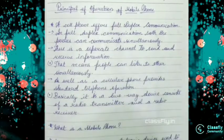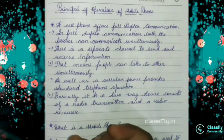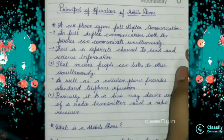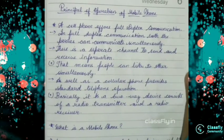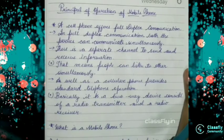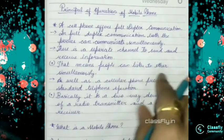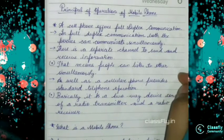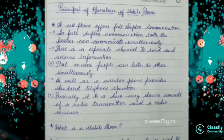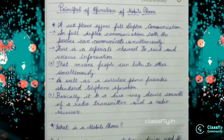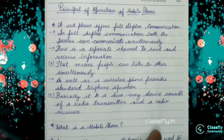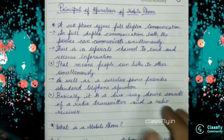That means he also can say to me as well as I also can say to him or her. There is a separate channel to send and receive information. That means people can listen to each other simultaneously. As I told, both of them can talk to each other, can receive the information to each other at the similar time. As well as a cellular phone provides standard telephone operation. So it will provide an operation which is very standard.